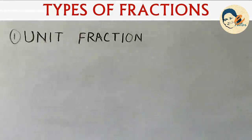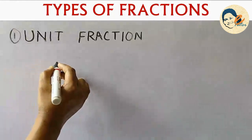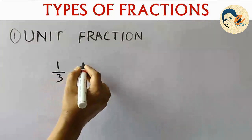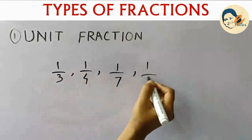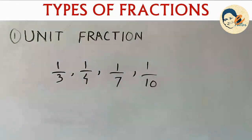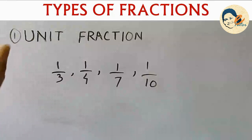Our first type of fraction is unit fraction. What is a unit fraction? It is a fraction where the numerator is one and the denominator is a positive integer. So 1/3, 1/4, 1/7, 1/10 — all of these fractions are unit fractions. In all these examples the numerator is one.